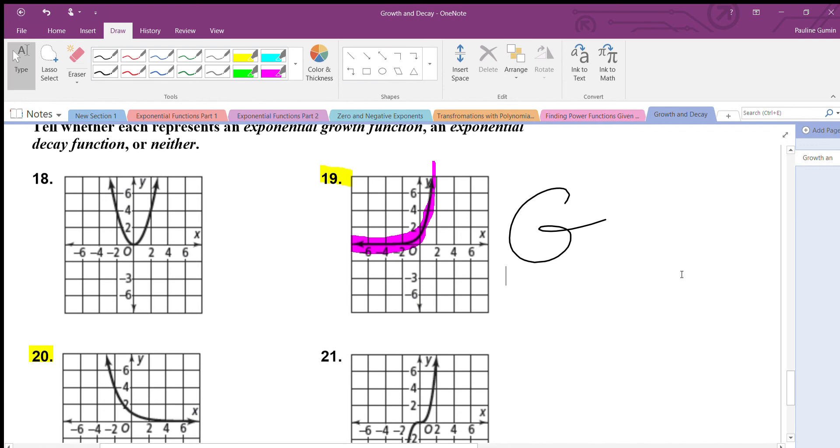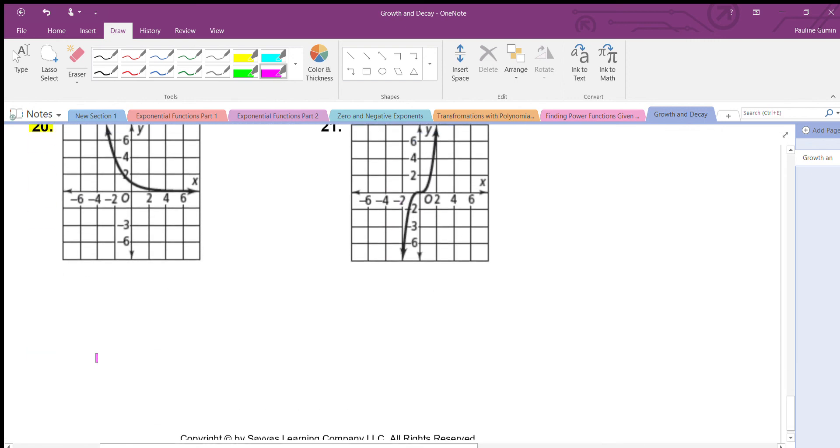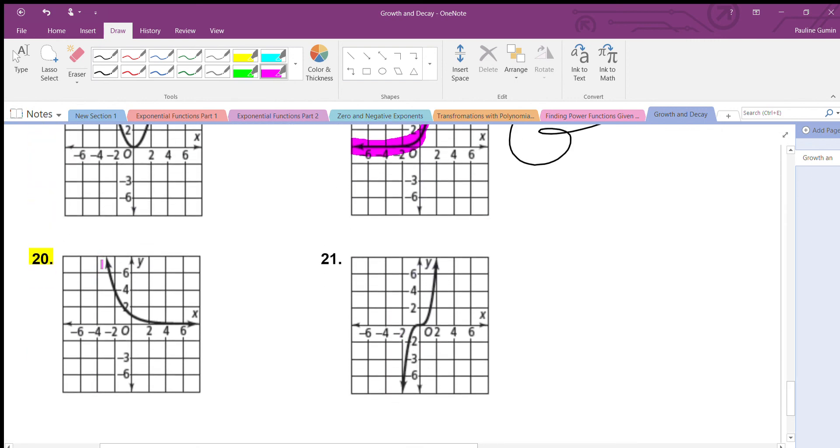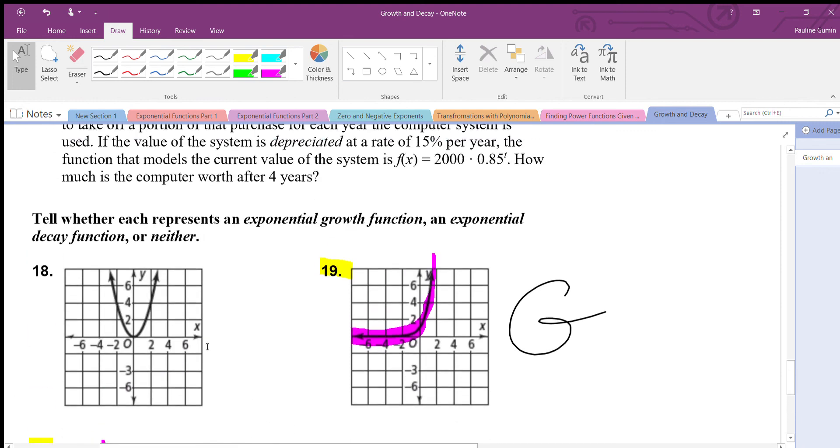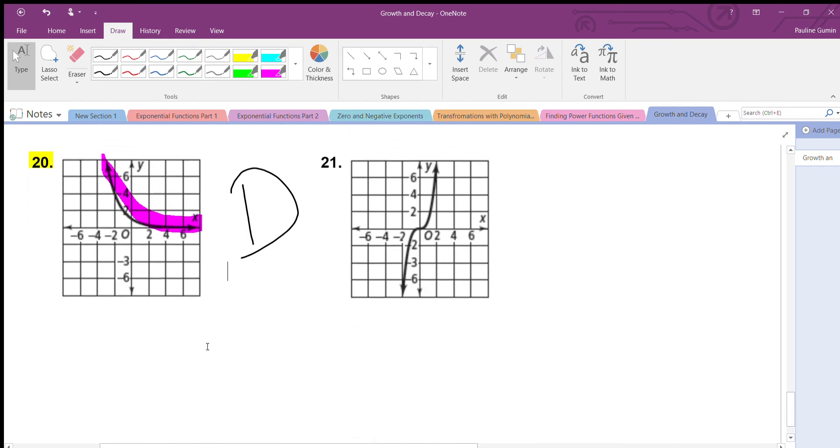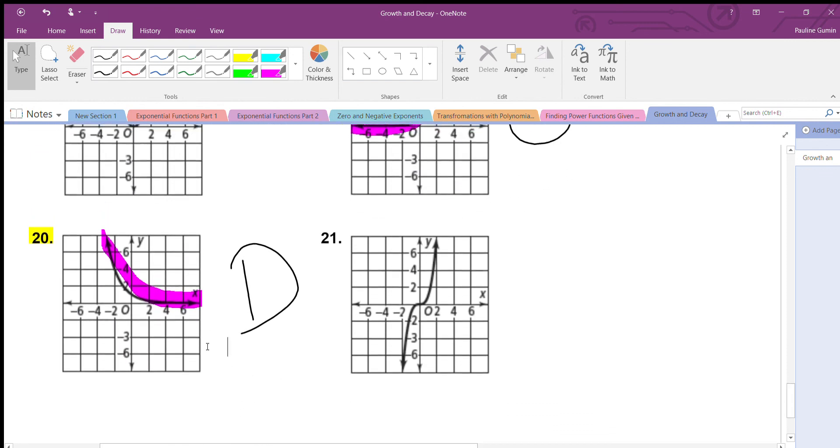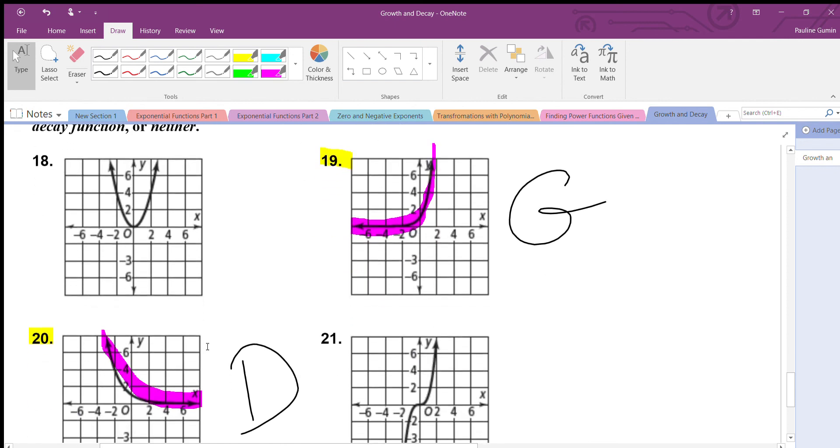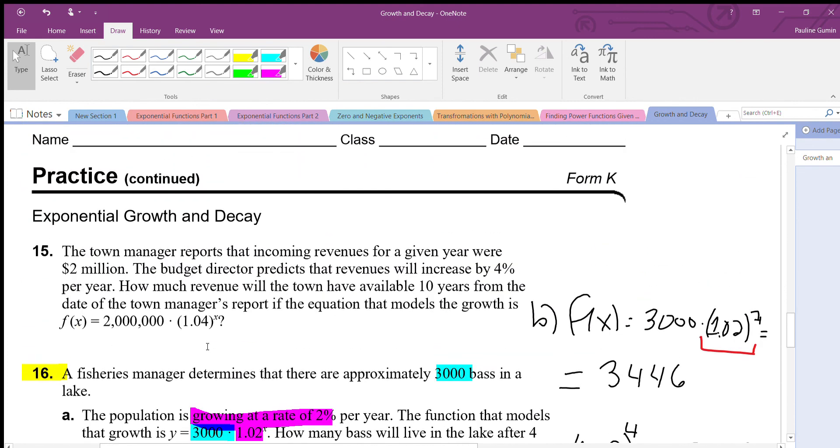Let's do the same thing for number twenty. We're going to put our finger on the very left part of the graph and trace. It's going down, that's decay. Number eighteen and twenty one are obviously not exponential. Eighteen is actually a quadratic and twenty one is an x to the power of three. I hope that helped clear some stuff up for you. If you have any other questions, please don't hesitate to ask. Have a good rest of the day, bye.